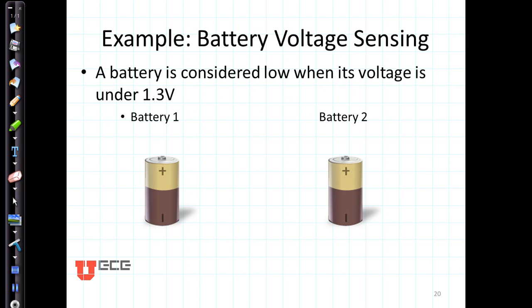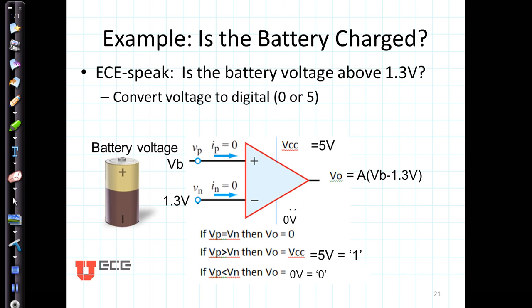Let's go through an example. Let's suppose we wanted to build a battery voltage sensing system, and a battery is considered low when its voltage is under 1.3. Let's say I've got two batteries. So for example, I want to know, is this one battery charged? In ECE speak, that is, is the battery voltage above 1.3 volts? So what I'm going to do is convert this value to digital, a value of zero or five volts.